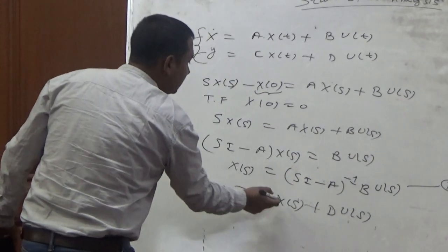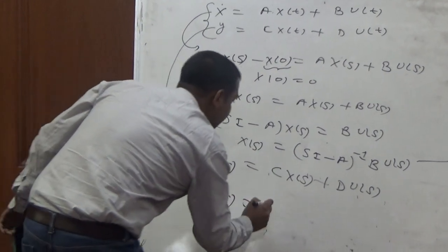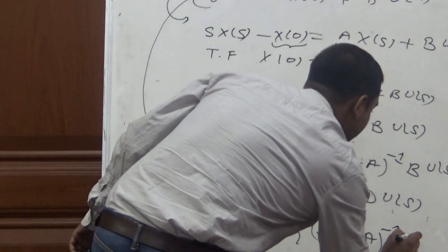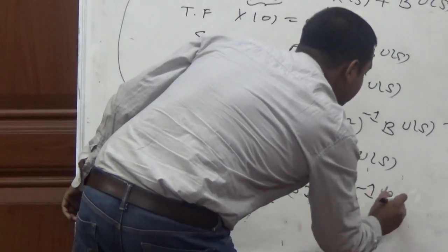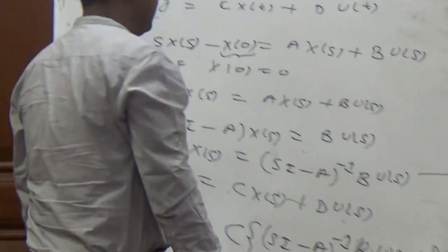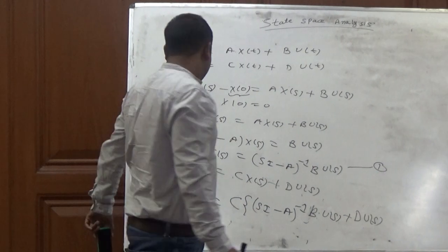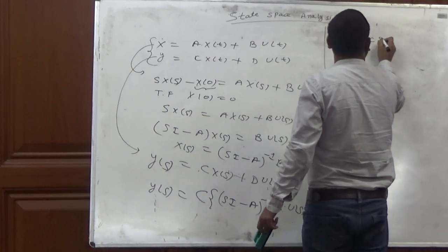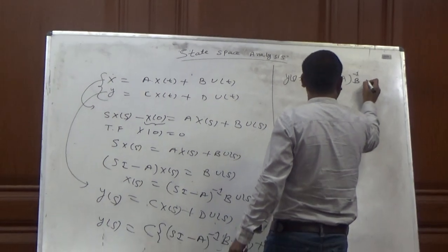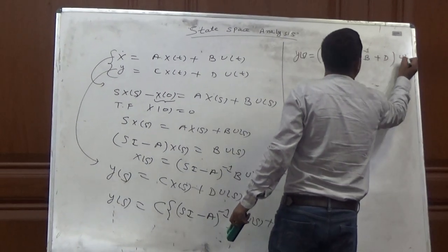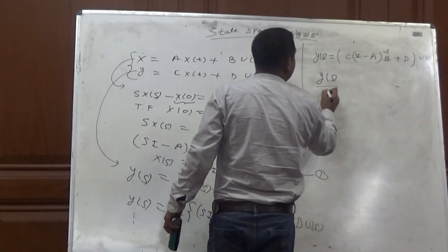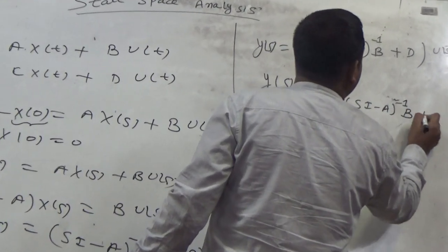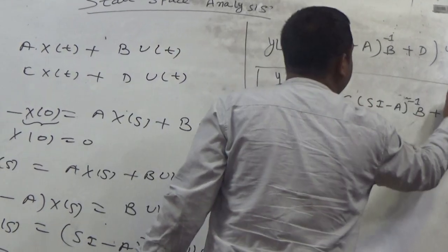From Equation 1, we substitute the value of X(s). So we have Y(s) equals C times (sI minus A) inverse times B times U(s) plus D times U(s). Taking U(s) as common, we have Y(s) equals [C(sI minus A) inverse B plus D] times U(s). Taking the ratio of output to input, the transfer function is: H(s) equals C(sI minus A) inverse B plus D.